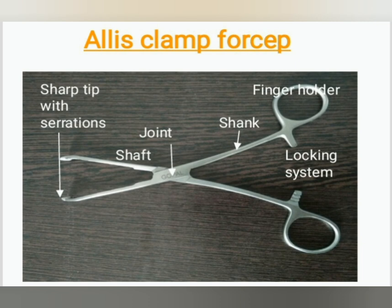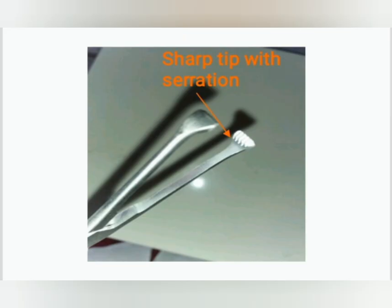Next is the Alice clamp forcep. The Alice clamp forcep has the following parts: finger holder, shank, joint, shaft, and sharp tip with serration. It also has a three locking system.